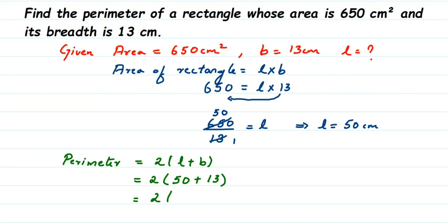50 plus 13 gives 63, and 2 into 63 gives 126, so the perimeter is 126 centimeter. The answer is one unit, that is centimeter. I hope this question is clear — in case you have other questions or doubts, you can drop a comment. Thank you so much for watching.